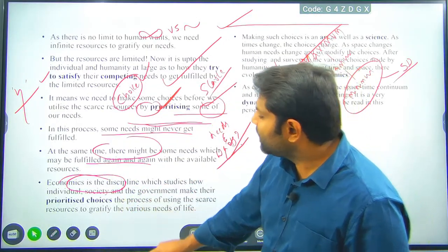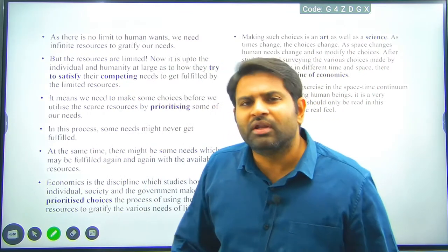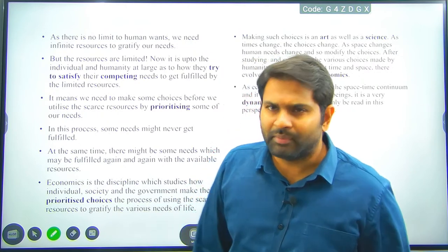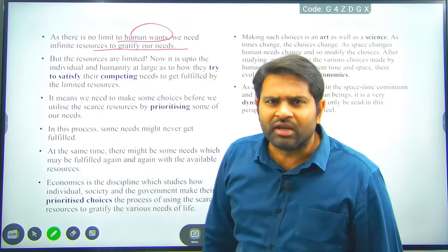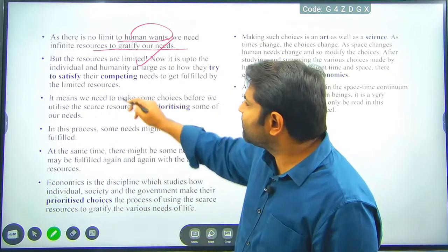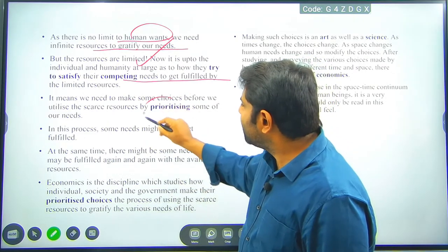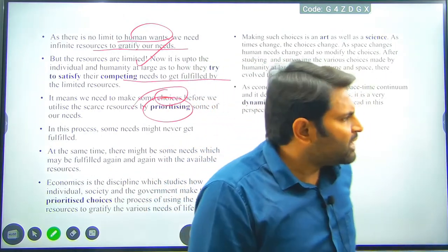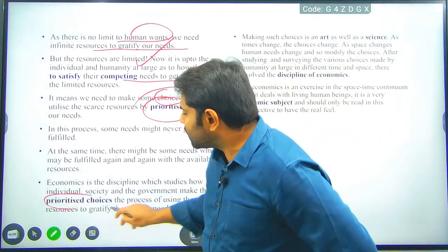So the definition is clear — one is resources, and the other is utilization of resources. When utilization comes into picture, you need to make choices, and based on your choice, efficiency will follow. There is no limit to human wants — we need infinite resources to gratify our needs, which is not possible, which is why resources are limited. How will we satisfy competing needs with limited resources? This subject is all about making choices and making priorities — economy is all about prioritized choices.